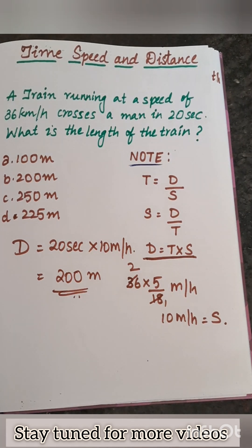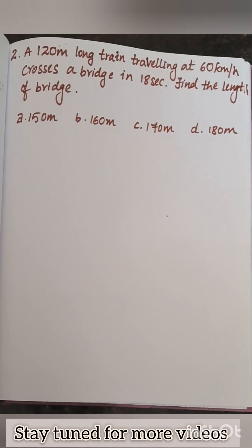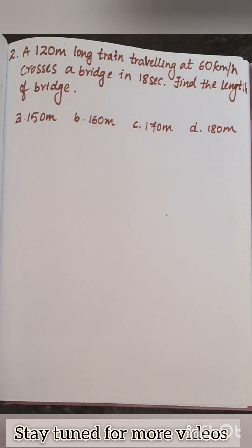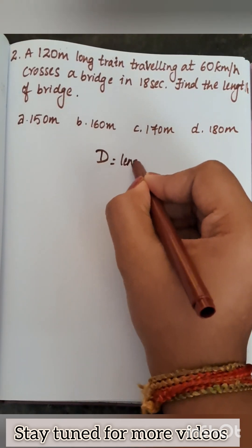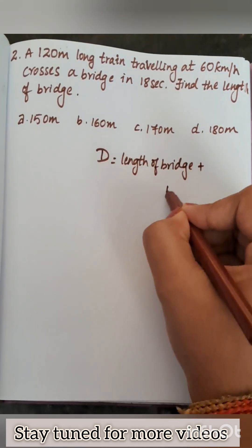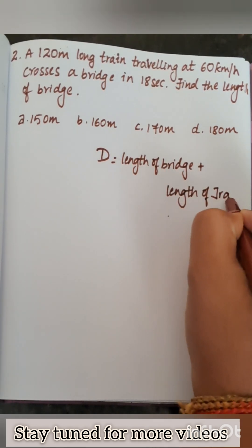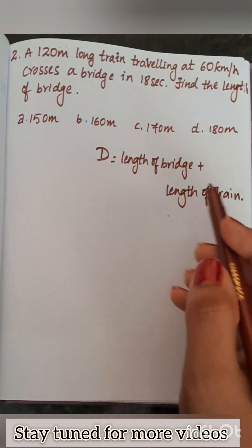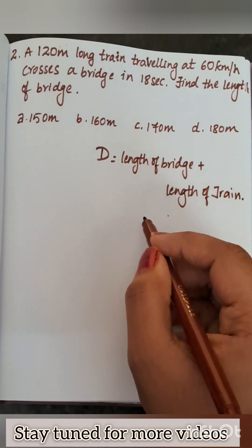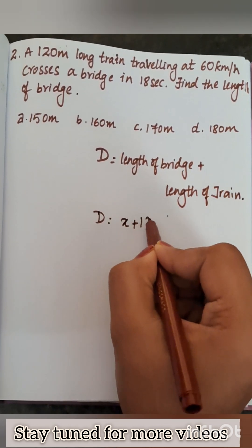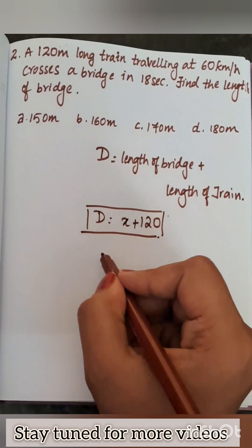Now let us see the second question. A 120-meter long train traveling at 60 kilometers per hour crosses a bridge in 18 seconds. Find the length of the bridge. Distance equals the length of the train plus the length of the bridge. So d equals x plus 120, where x is the unknown length of the bridge.